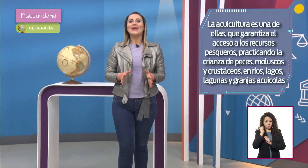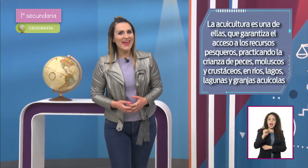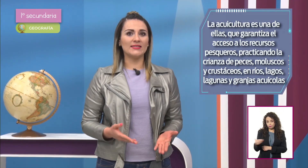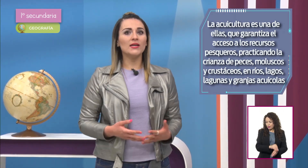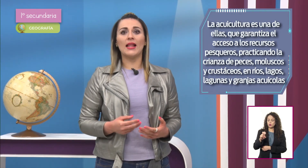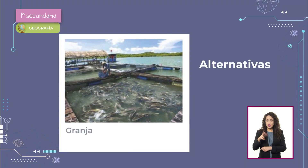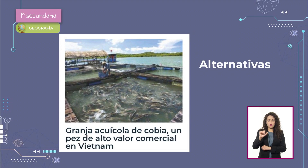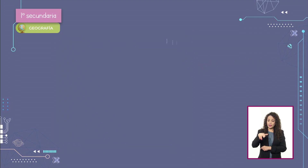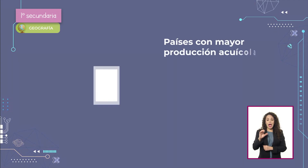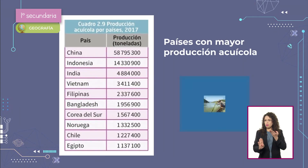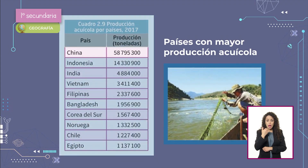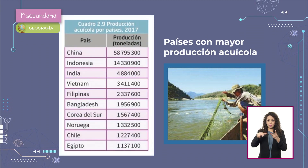Sí, la acuicultura es una de ellas, que garantiza el acceso a los recursos pesqueros practicando la crianza de peces, moluscos y crustáceos en ríos, lagos, lagunas y granjas acuícolas. Como la granja acuícola de cobia, un pez de alto valor comercial en Vietnam. La acuicultura ha ganado terreno a nivel mundial y se practica principalmente en países como China, Indonesia, India y Vietnam, como podemos ver en la tabla.